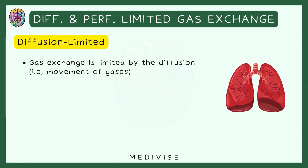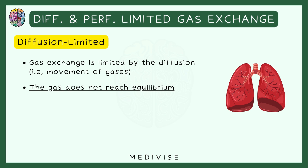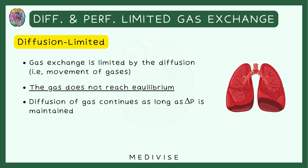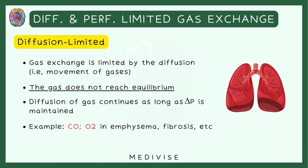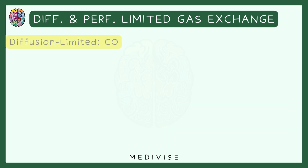Now let's jump to diffusion limited gas exchange. Here, the gas exchange is limited by diffusion — the movement of gases — and the equilibrium does not reach. The diffusion of gas continues as long as the delta P, or partial pressure gradient, is maintained. Examples include carbon monoxide diffusion and oxygen diffusion in conditions such as emphysema and fibrosis.